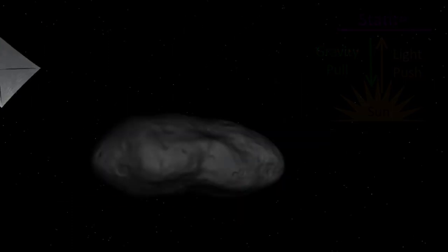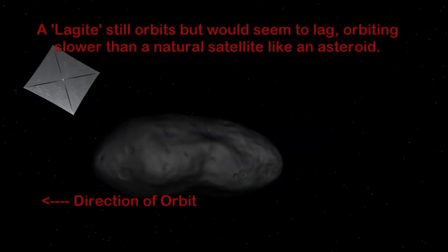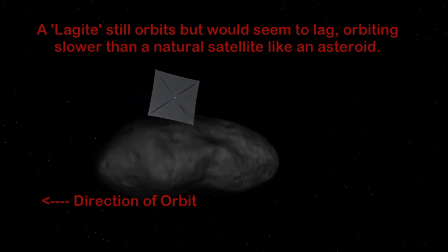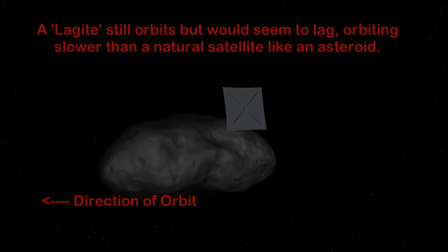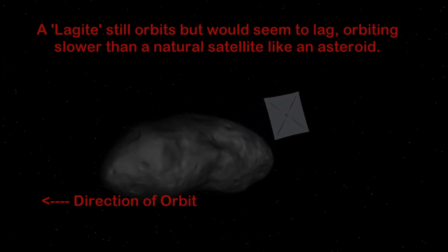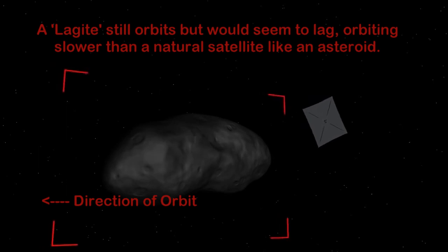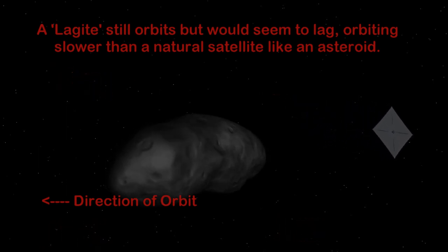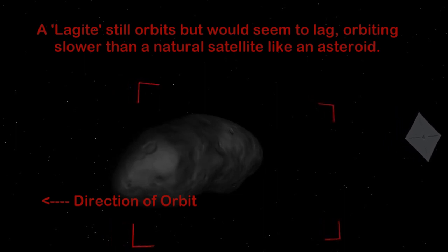Also statites can make use of solar wind to increase the mass they can carry, and one can combine normal orbital methods with these to produce something I call a lagite, or lagging satellite. One that orbits slower than normal by combining the solar push with the normal orbital mechanics, allowing decently heavier objects to orbit at a desired speed rather than the natural one.